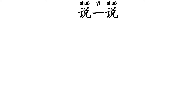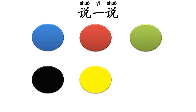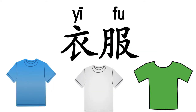说一说 — try to say these colors in Mandarin. Now, 衣服 means 'shirt' or 'clothes'. This one is 蓝色 — blue color — 蓝色衣服. This is 白色衣服.